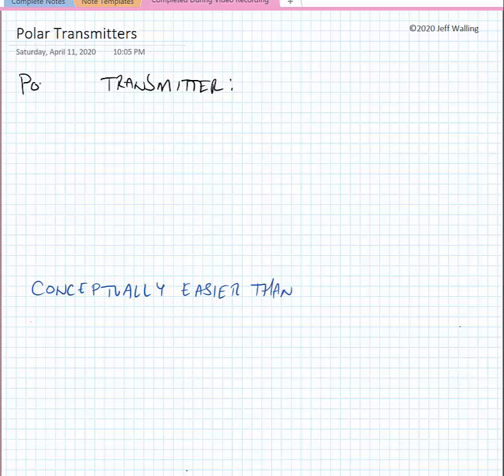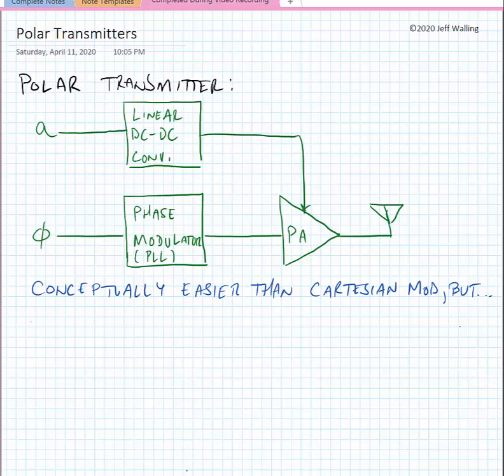Next we're going to look at the polar transmitter. In a polar transmitter we have our amplitude modulation that we use to modulate a linear dc to dc converter, this can be a series regulator sometimes called an LDO or low dropout regulator, and we have our phase signal driving a phase modulator. This can be something like a PLL or it could be the mixer from the cartesian modulator that we saw on the previous page.